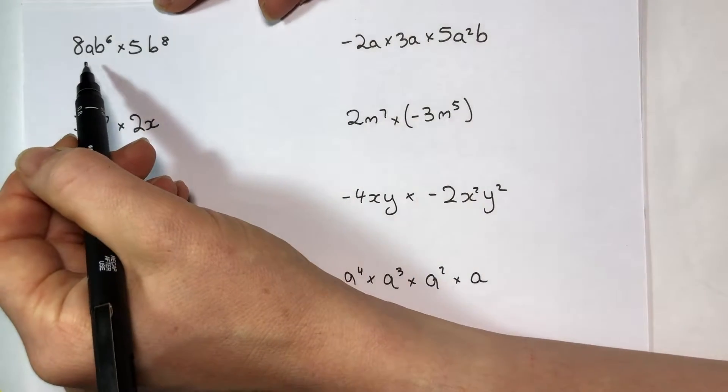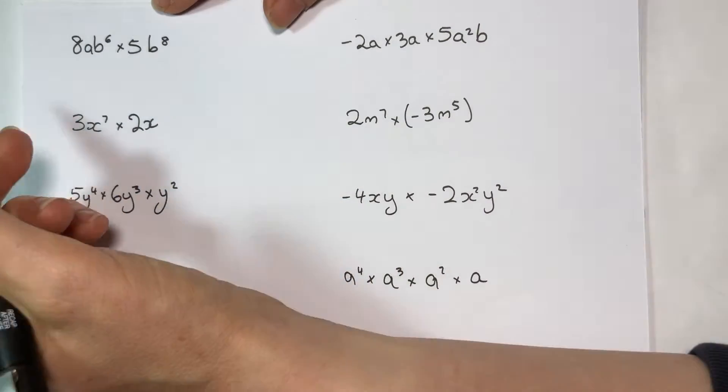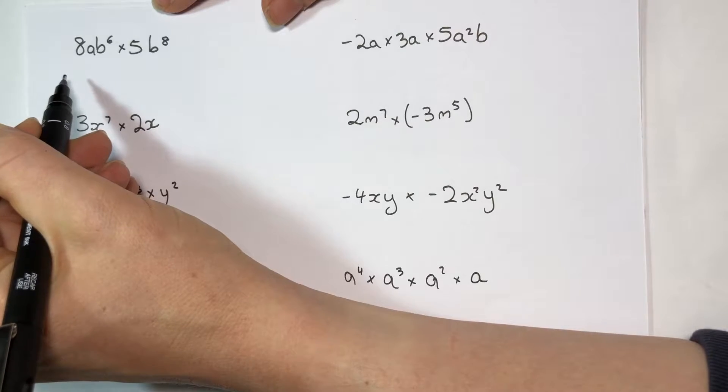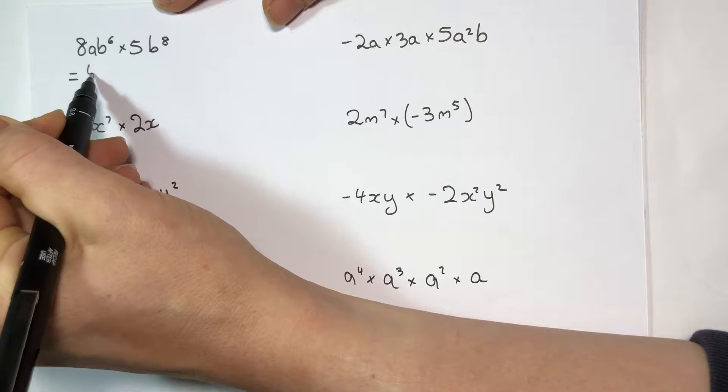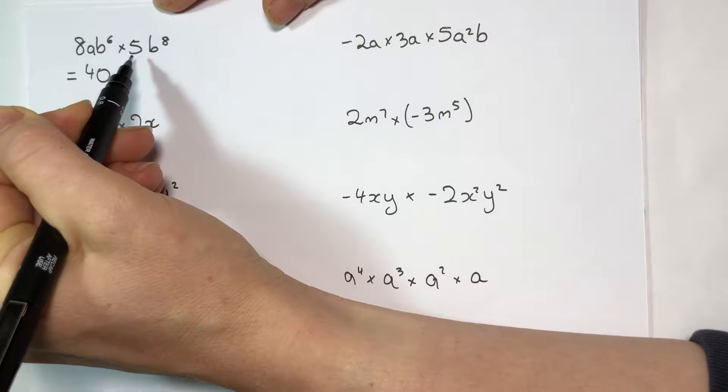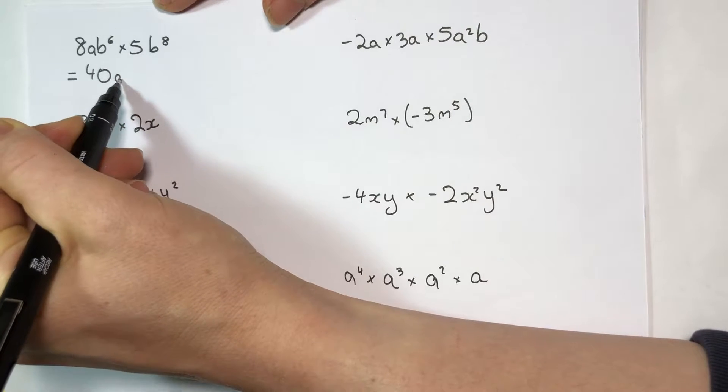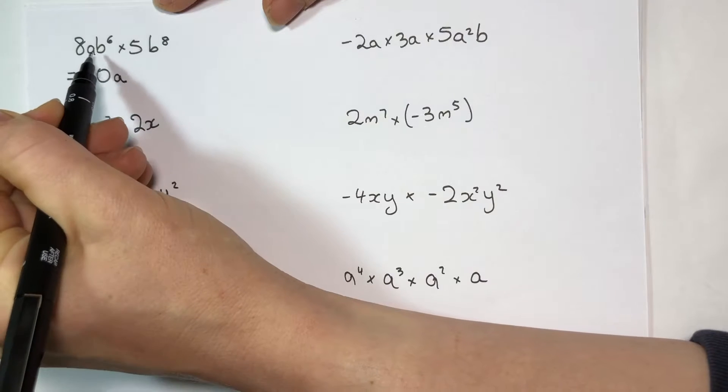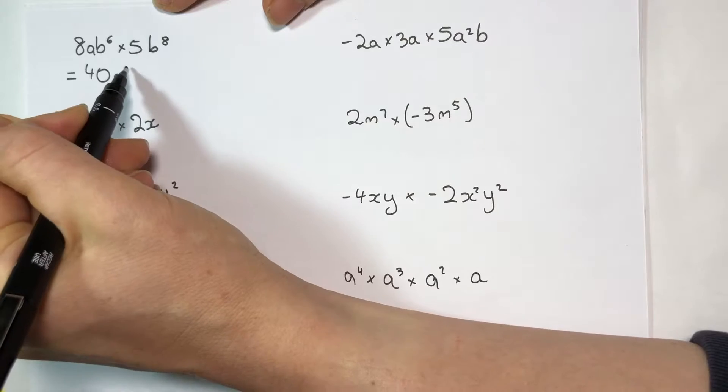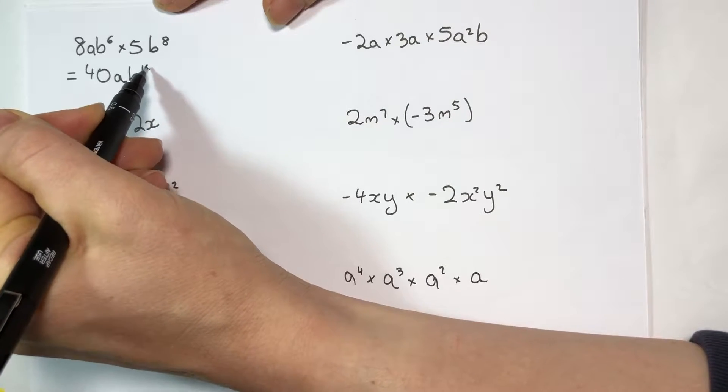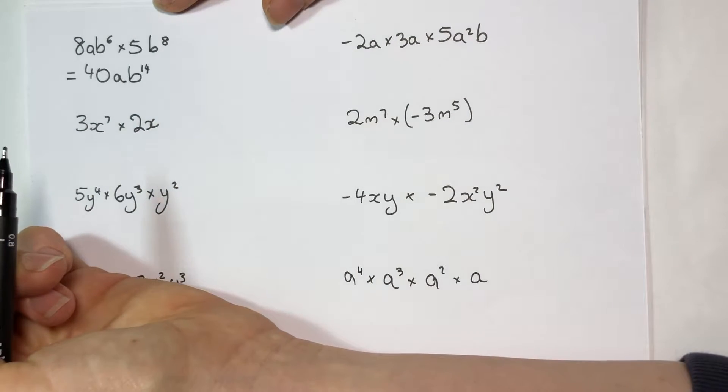So first up, 8ab to the 6 by 5b to the 8, pause it, alright. So 8 fives are 40, we times the big numbers together, there's no more a's, so just the albino nature once, and then I've got 6 lots of b and another 8, so I actually have 14 pieces of b genetics on this baby.